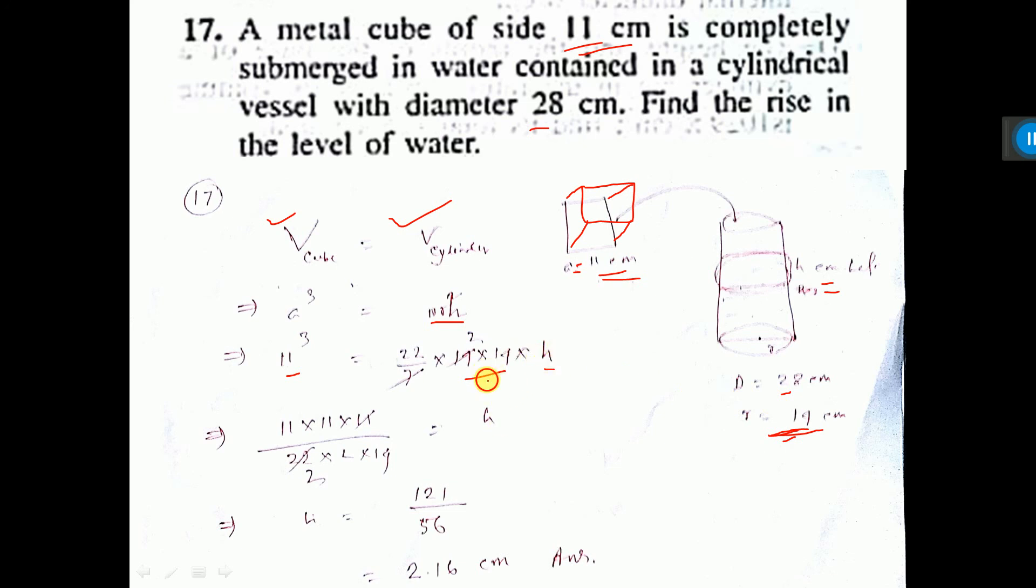So you have to find S. So this one you take it down and calculate. So this is the height of the rise in level of water it is coming. Height, that is rise in water level. That is the sum.